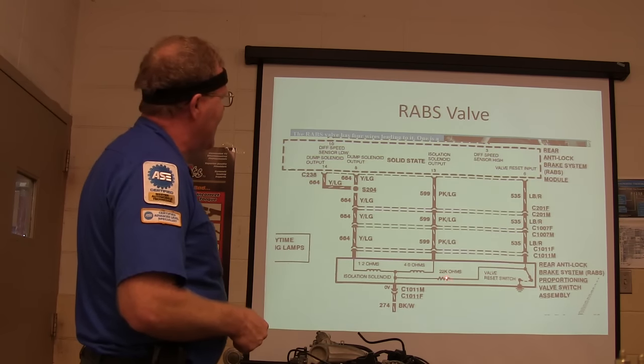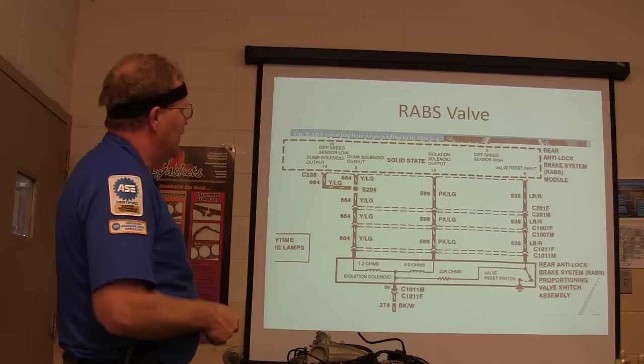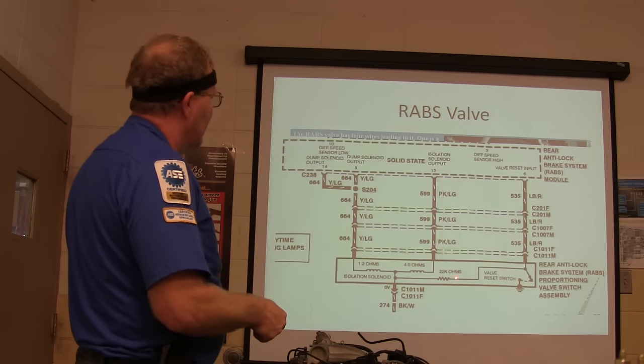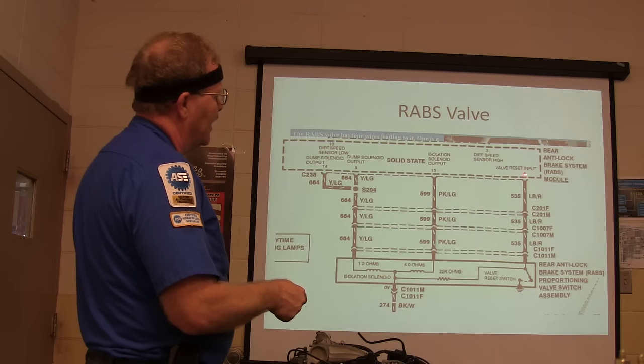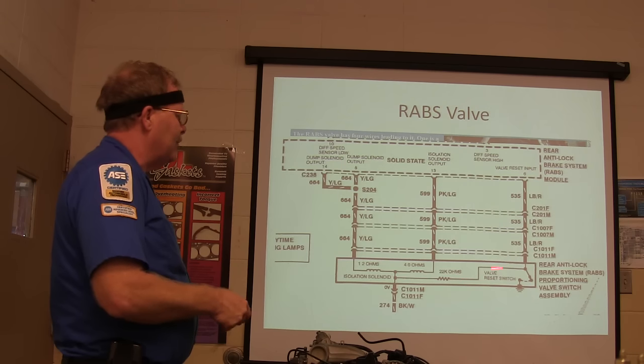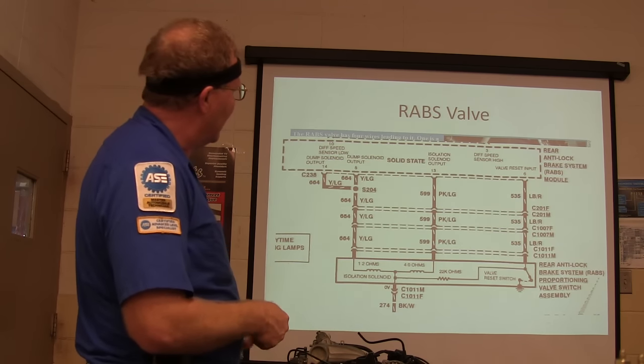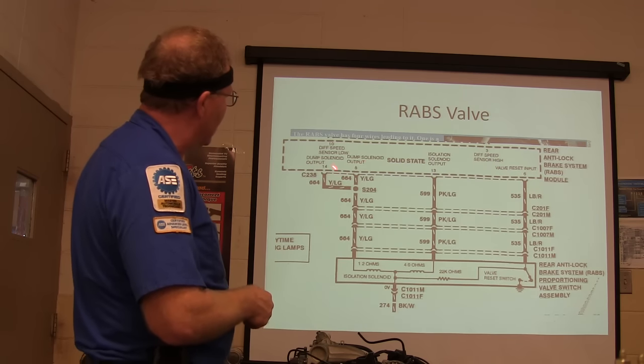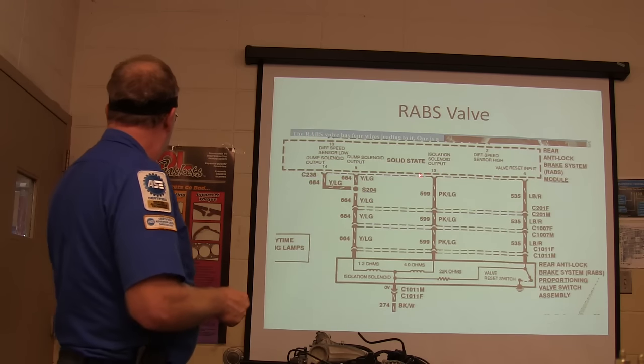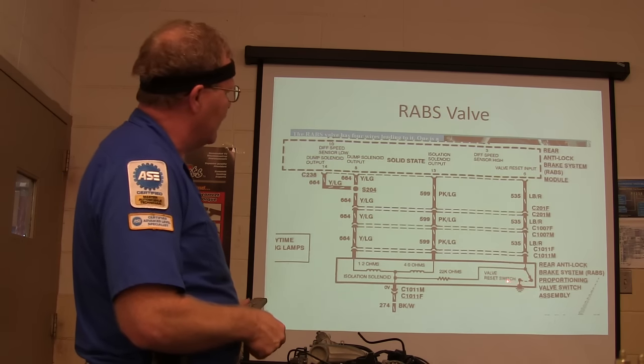The way that it knows that this valve is disconnected is it doesn't see that 22,000 ohm resistor. And basically what it does is it puts voltage out on pin six. And with that 22,000 ohm resistor in there, it's basically going to see a certain voltage that it's looking for right here. I even made a little table one time on my own to determine what was going on whenever I had one of these. It had a bad RAB's valve because the resistor had gone bad in the RAB's valve. And it was turning on the red brake light and that kind of thing. But anyway, that's what that looks like. And so you've got dump solenoid. Output is going out on two wires because they're wanting to make sure it's got plenty of current carrying capability. The isolation solenoid is over here. This one right here, 1.2 ohms, that's 4 ohms, and so on and so forth.